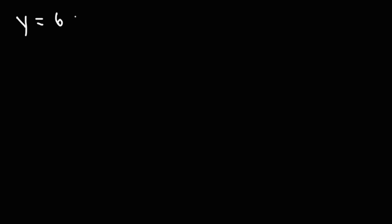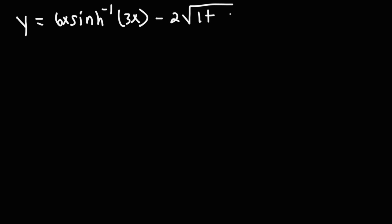Let's work on one more problem. We have the equation y equals 6x times the inverse hyperbolic sine of 3x, minus 2 square root of 1 plus 9x squared. Go ahead and find the derivative of that expression.